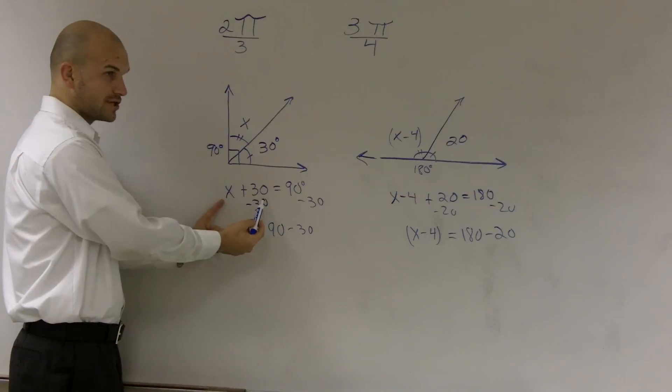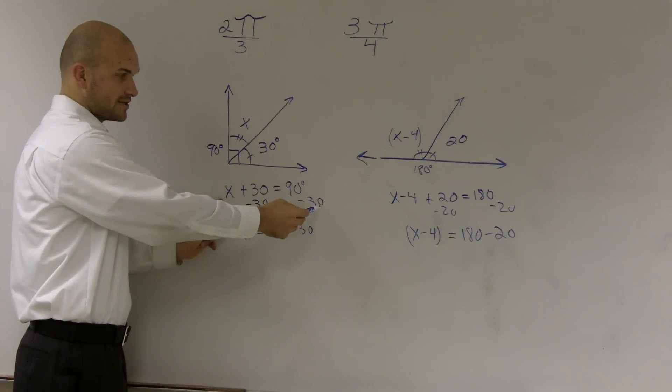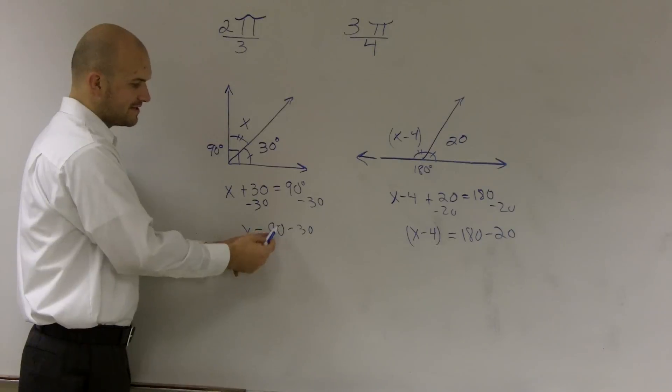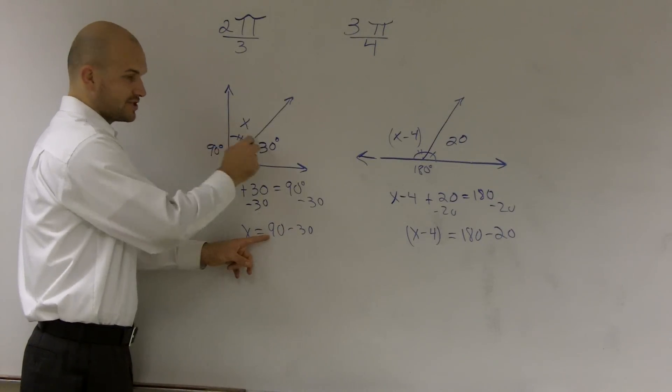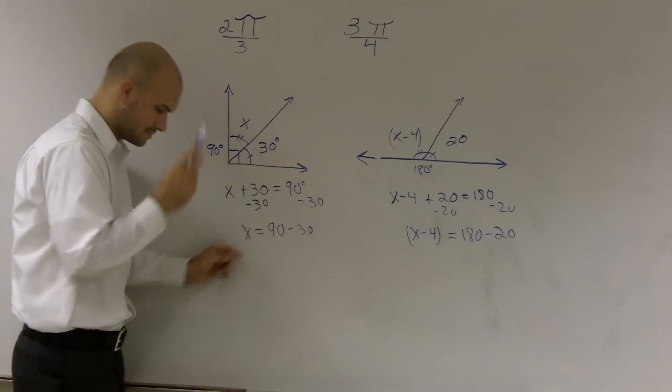You guys understand how I can set them equal to each other? And if I want to solve for this angle, I subtract 30 from the other side. So, therefore, equivalently, what I have is 90 degrees, which is the whole angle, minus the angle I know.